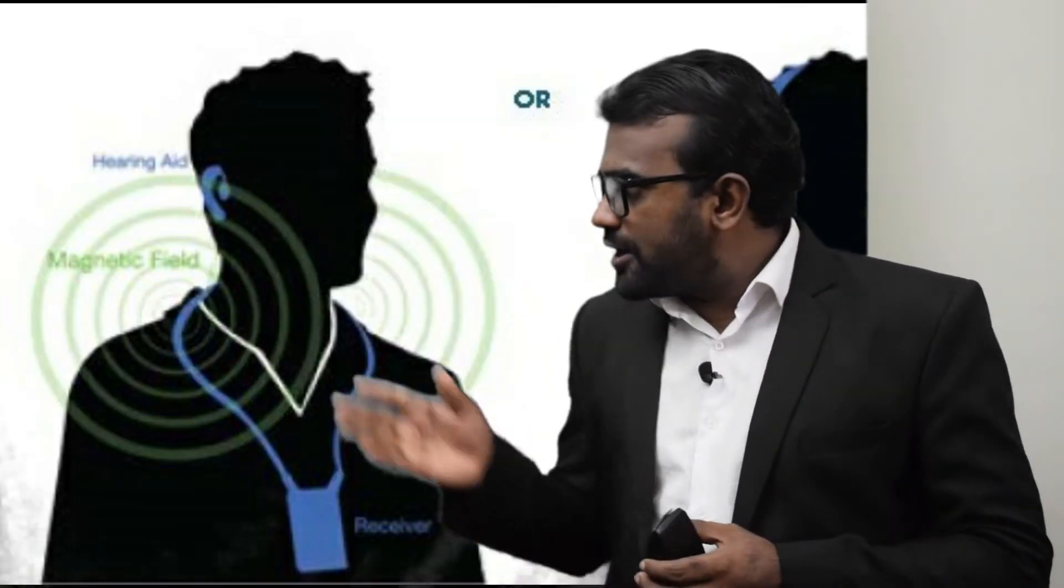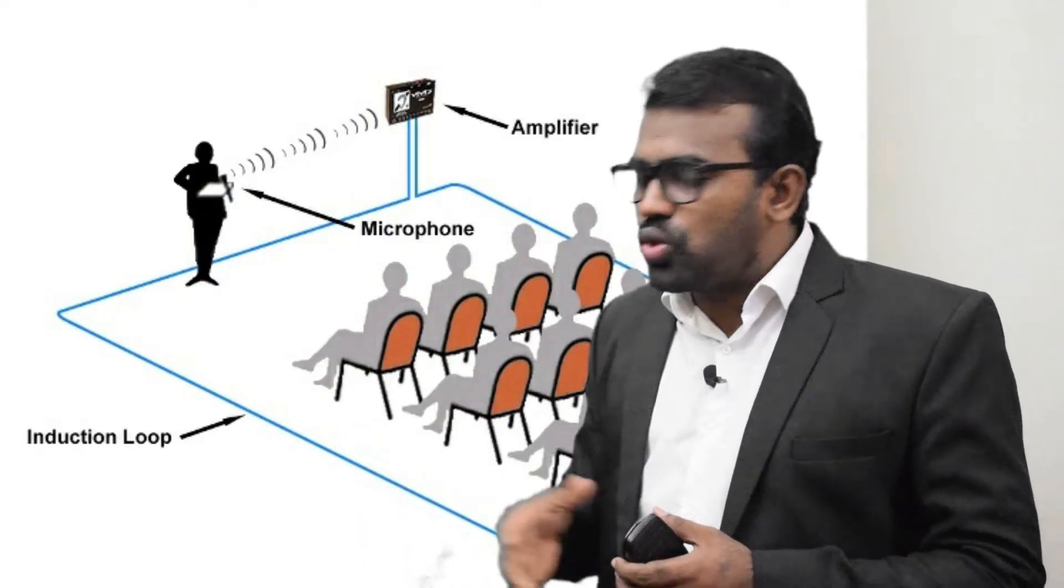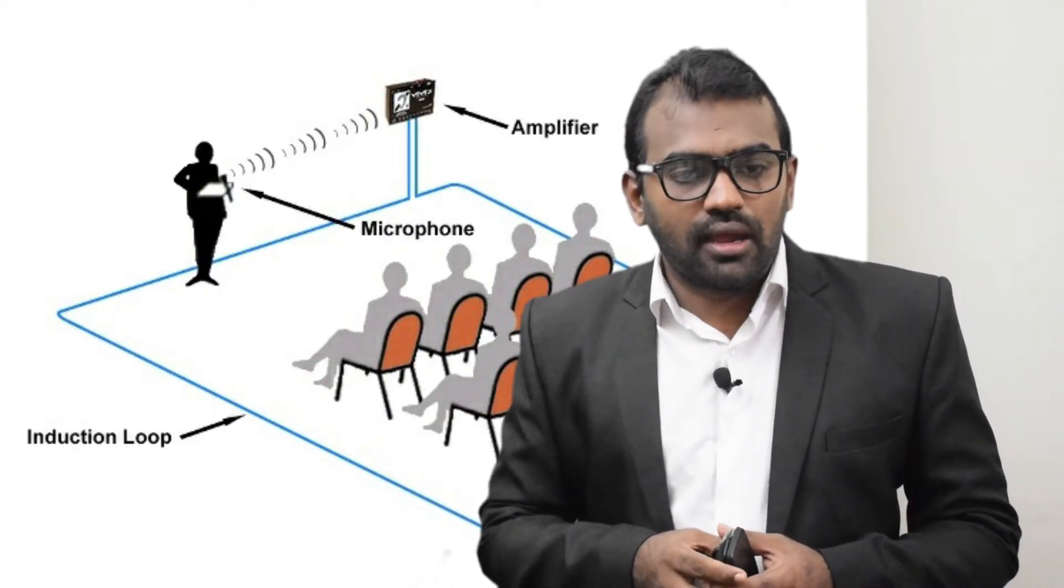Infrared systems are ALDs that utilize light-based technology. They guarantee privacy because light does not pass through walls. Inductive loop systems are wide area loop systems that utilize an electromagnetic field to deliver the sound.